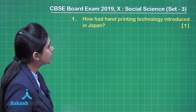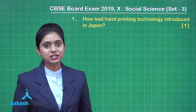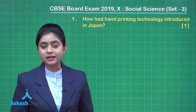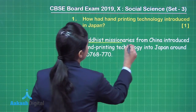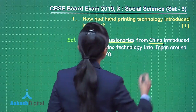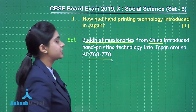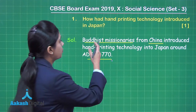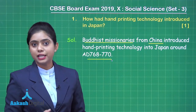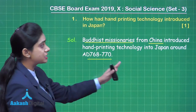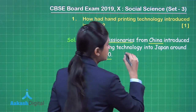Question 1: How was hand printing technology introduced in Japan? The Buddhist missionaries from China introduced hand printing technology into Japan around 768–770 AD. So it were the Buddhist missionaries from China who introduced hand printing technology into Japan. If you have written this answer, you will be able to get one mark.